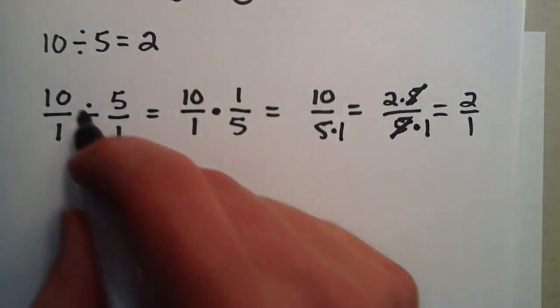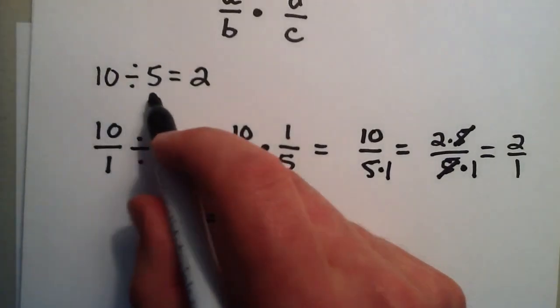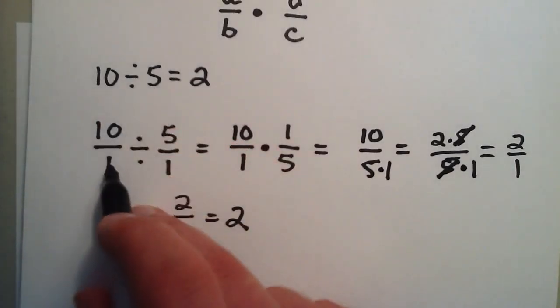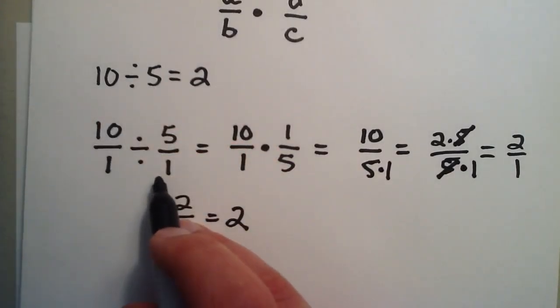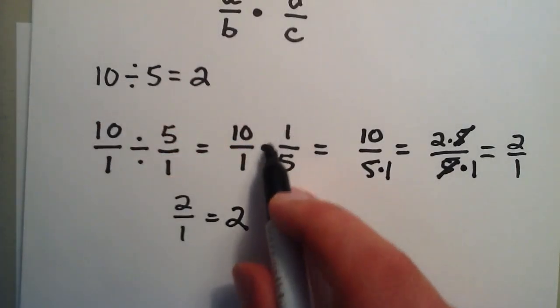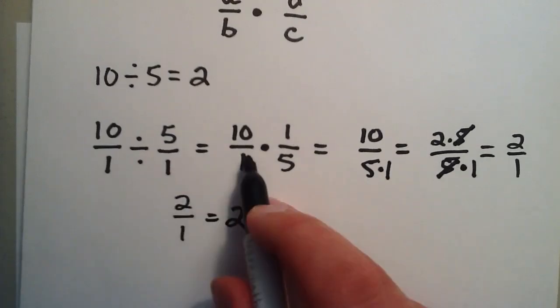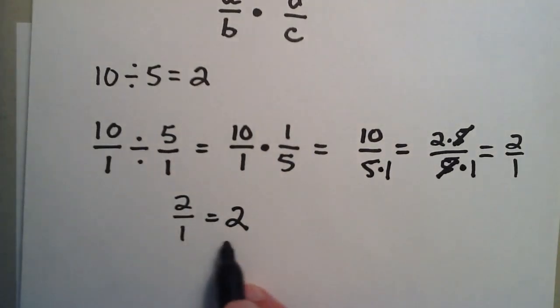So we've shown right here that 10 divided by 5 equals 2, and we did it by representing 10 divided by 5 as a division of fractions, flipping the second term and using a multiplication sign instead of a division sign, multiplying through, and we got the correct answer.